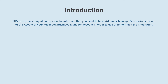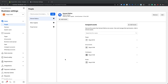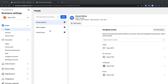Before proceeding, please be informed that you need to have admin or manage permissions for all of the assets of your Facebook Business Manager account in order to use them to finish the integration. To verify the access level, please log into your Facebook Business Manager account and navigate to the People tab under the Users section.